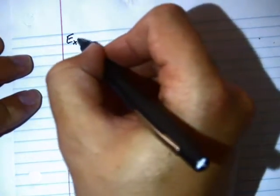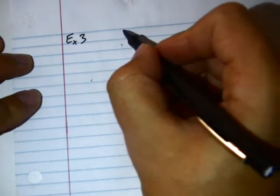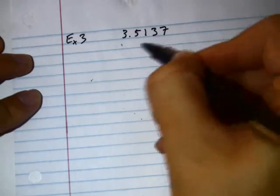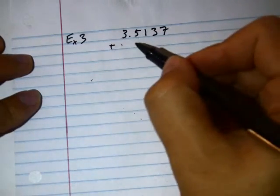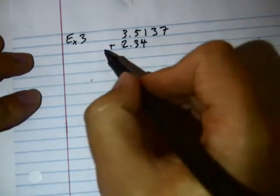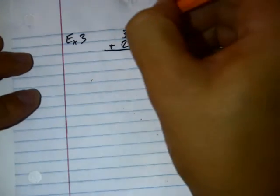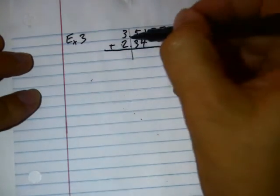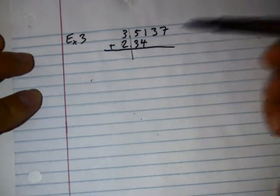I'll call this one example 3. We're going to add 3.5137 and 2.34. Notice, again, I'm going to keep saying this until you get sick of me. You probably already are. The decimal point here is lined up. And I'm going to add these up.